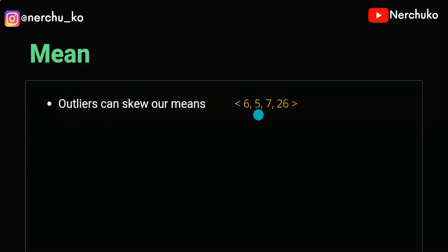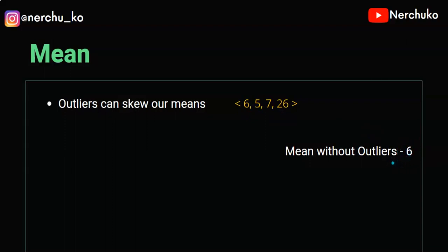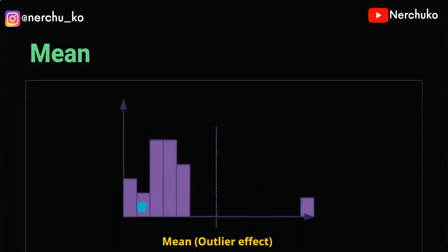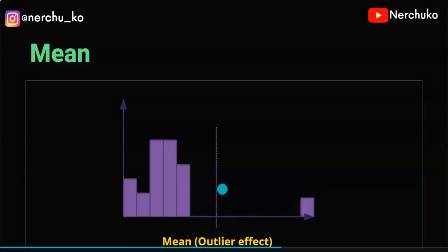Here we can see the distribution of the data: 6, 5, 7, and 26. Here we have 26 as the outlier. Here we can see the mean without the outlier. The mean without the outlier, using 6, 5, 7, is 6. But if we include the outlier 26, the mean changes a lot. Here we can see in the graphic how the outlier shifts the mean position in the distribution.